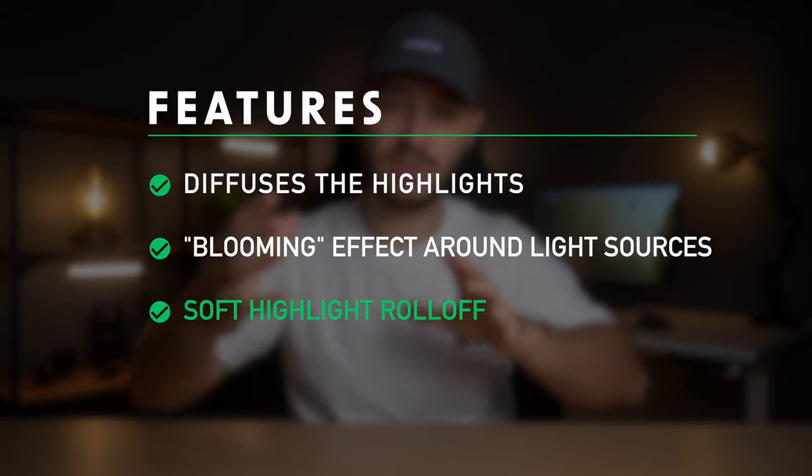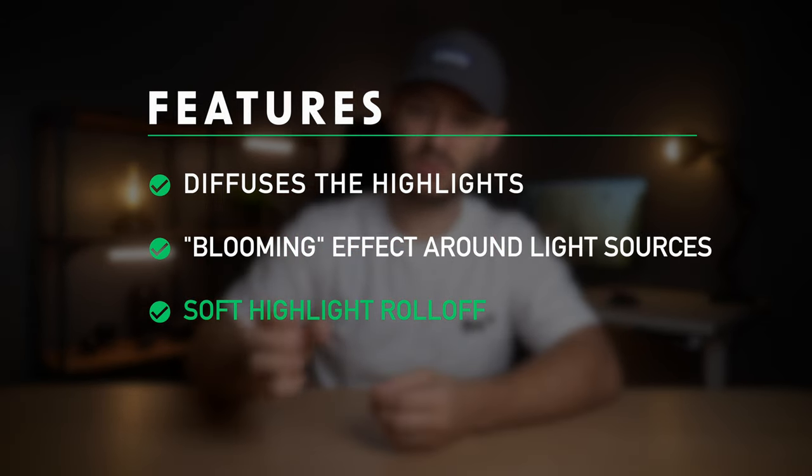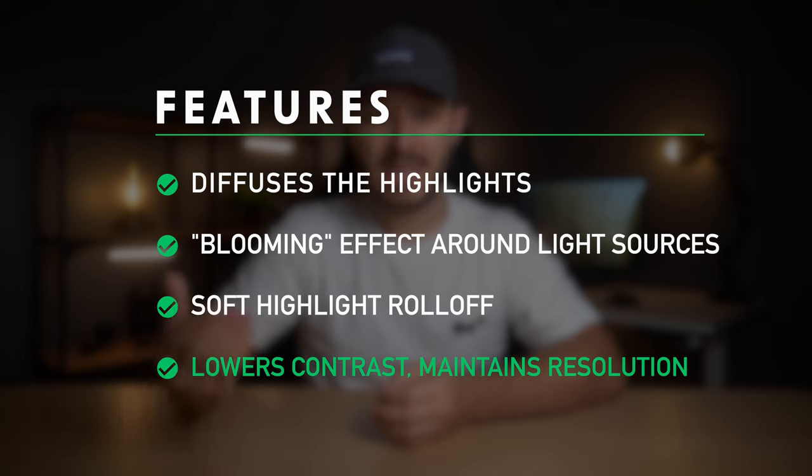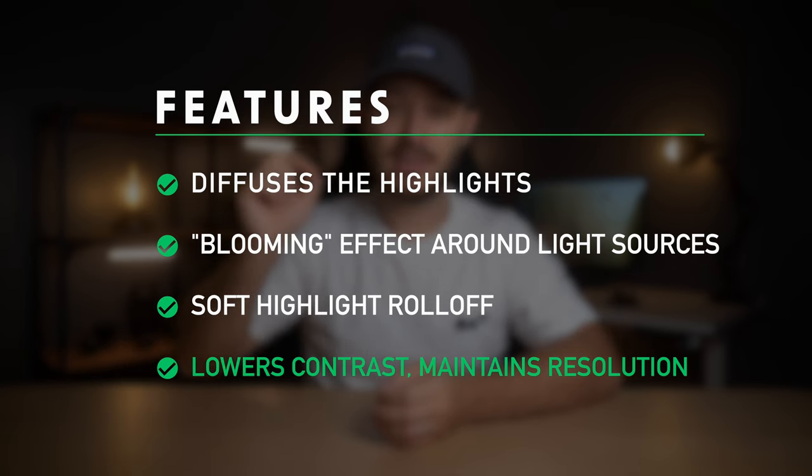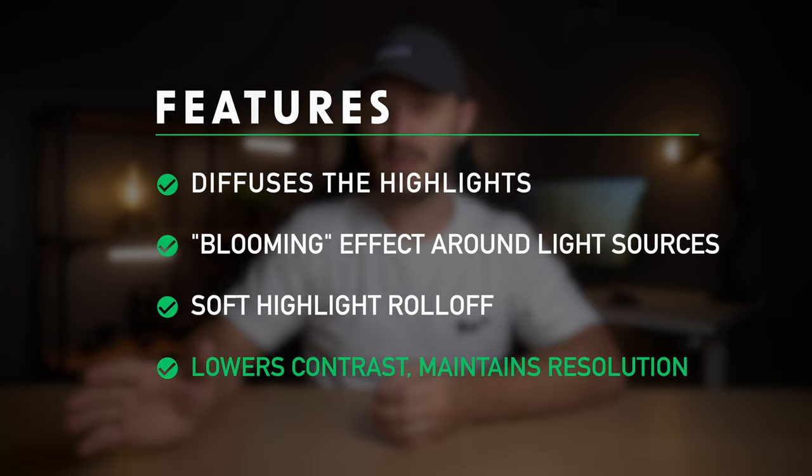Digital photography can have a really harsh contrast between the highlights and the shadows — almost unnatural and sharper than what our eyes can see. The good thing about a black mist filter is it adds a soft roll-off from the highlights and the shadows. Sometimes that really sharp digital photo or video is not attractive — it's kind of harsh or overdone. These filters keep the resolution so you're still getting a lot of detail, but they lower some contrast and their main purpose is to diffuse the highlights and create that soft, glowing, dreamy cinematic look.